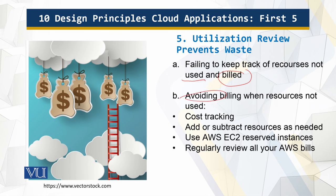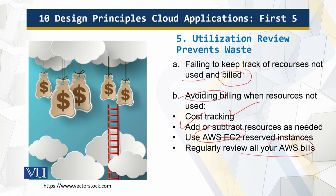To avoid unnecessary costs, use the Amazon Web Services Trusted Advisor service or a commercial utilization and cost tracking service like Cloudyn. Design the application so that individual resources can be added or subtracted to keep utilization rates high and avoid idle resources. Use Amazon Web Services EC2 Reserved Instances to reduce computing costs, and regularly review your AWS bills to identify resources or applications being used that you may not be aware of.